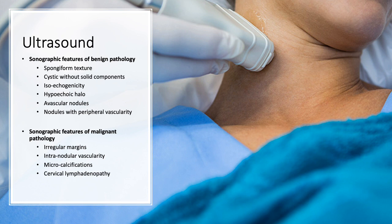On ultrasound, features suggestive of benign pathology are: spongiform texture, cystic without solid components, isoechogenicity, hypoechoic halo, avascular nodules, and nodules with peripheral vascularity. Malignant features on ultrasound include irregular margins, intranodular vascularity, microcalcifications, and cervical lymphadenopathy.